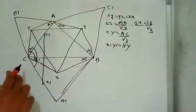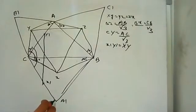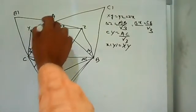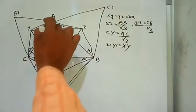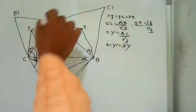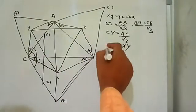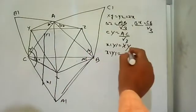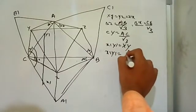So X1Y1 is equal to XY. Now, CX1 divided by CA1 is equal to 1 divided by root 3, and CY1 divided by CA1 is also 1 divided by root 3. That means XY is parallel to AA1, and XY equals X1Y1 equals AA1 divided by root 3.